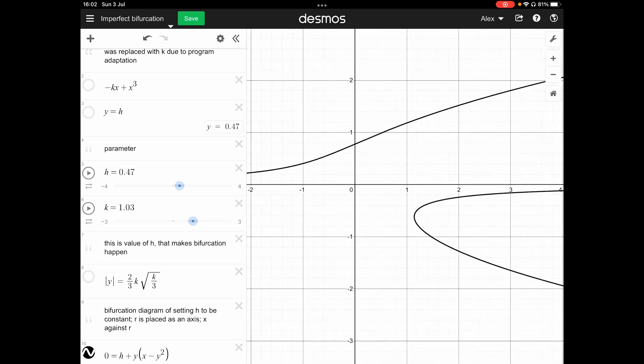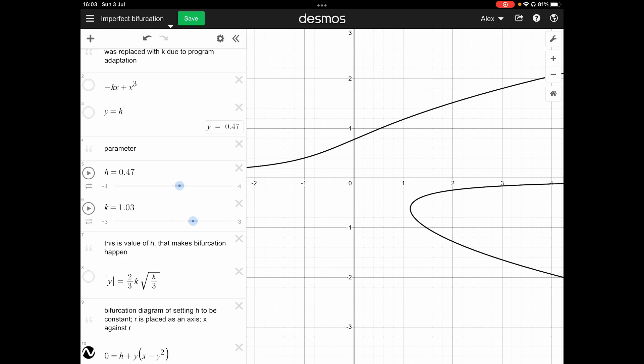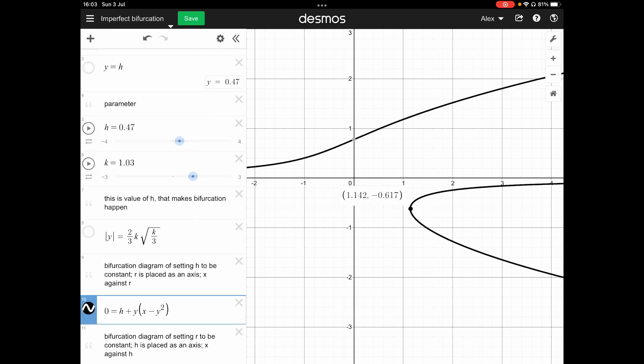The bifurcation diagram will be this one. In the bifurcation diagram, we're plotting the x-axis to be the r, then the y-axis to be the x. And here is where the saddle point happens. This point is where the saddle point happens.